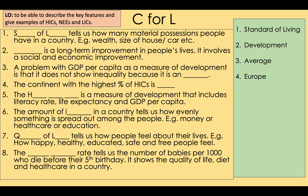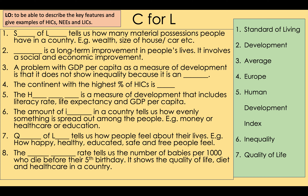Number four: the continent with the highest percentage of HICs is Europe — we are an HIC in the UK. Number five: the Human Development Index is a measure of development that includes literacy rate, life expectancy, and GDP per capita. Number six: inequality in a country tells us how evenly something is spread out among the people, e.g. money, health care, or education. Number seven: quality of life tells us how people feel about their lives — how happy, healthy, educated, and safe they feel. Number eight: the infant mortality rate, a social measure, tells us the number of babies per thousand who die before their fifth birthday, showing quality of life, diet, and health care in a country.